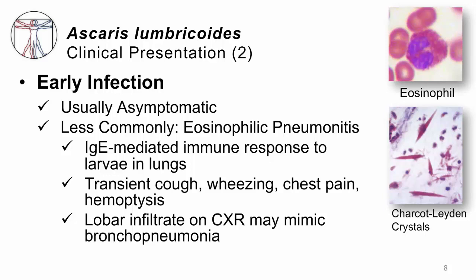IgE is the mediator of that immune response. What does it do to patients? They can have a cough, they can wheeze, they can develop chest pain, and sometimes they'll even cough up blood — that's called hemoptysis. If we check a chest x-ray, we can see a Löffler infiltrate, which looks for all the world like a classic bronchopneumonia. If you look in the sputum, you may see eosinophils where they shouldn't be, or a funny finding called the Charcot-Leyden crystal, which simply tells you there is a high burden of eosinophils within that pleural fluid. This is often called Löffler's syndrome.